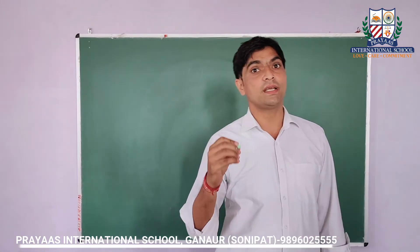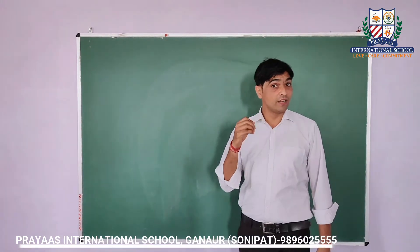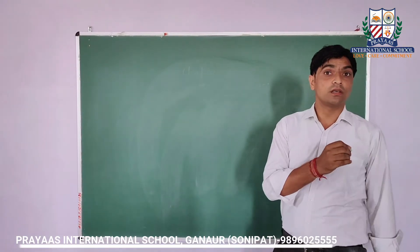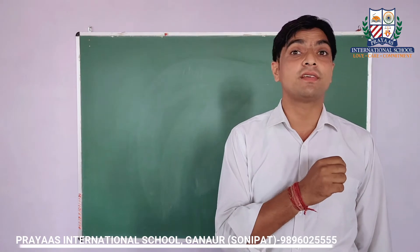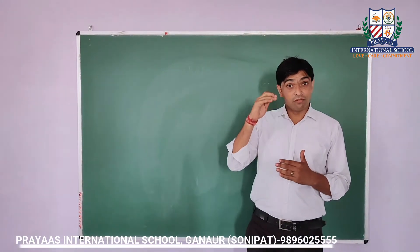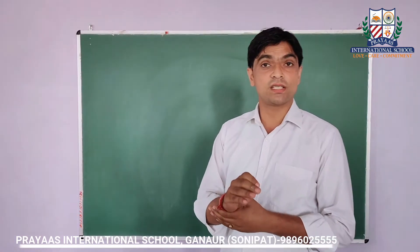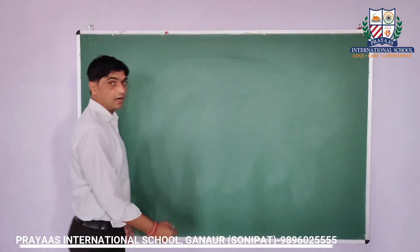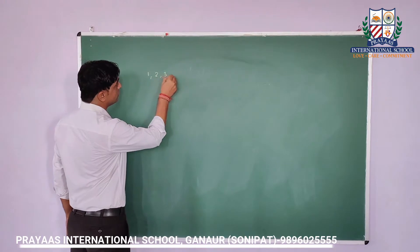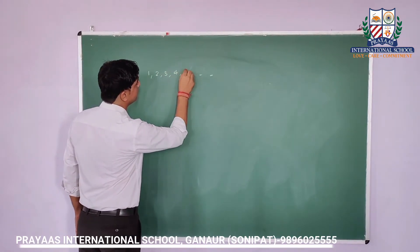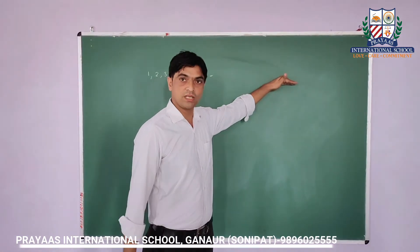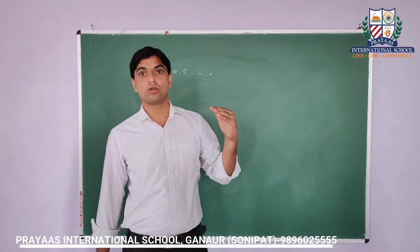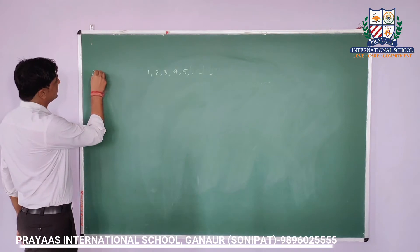If I ask any student to count the number of things available in the room where you are sitting, you will start definitely with counting: one, two, three. Naturally, we start from one. So one, two, three, four, five — these numbers are endless, we can count up to infinity. Infinity means the number which is not known to us. These types of numbers are known as natural numbers.